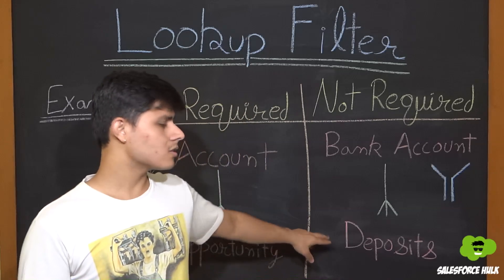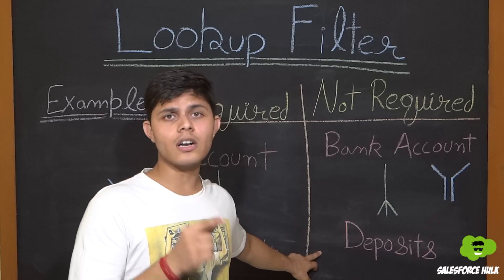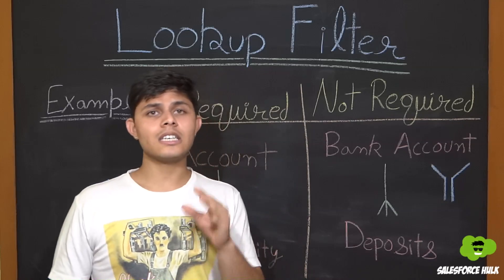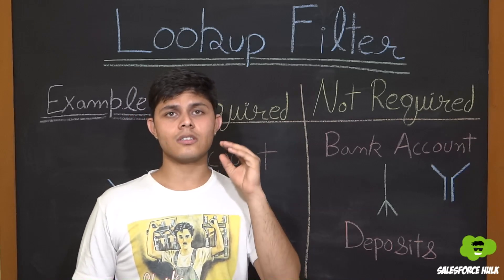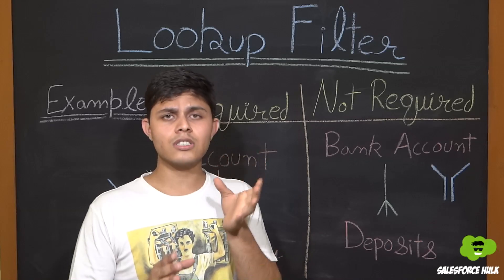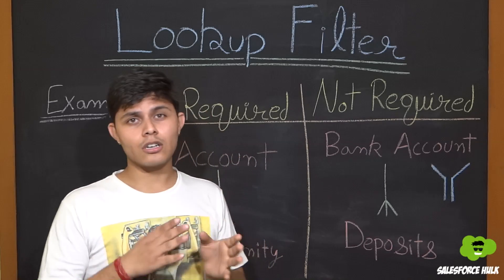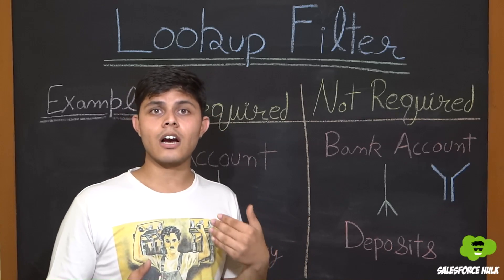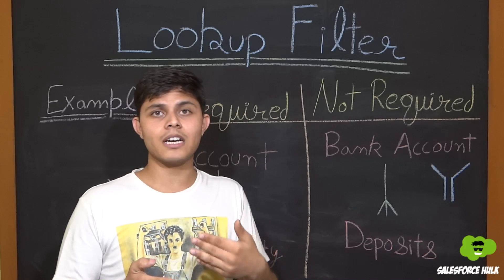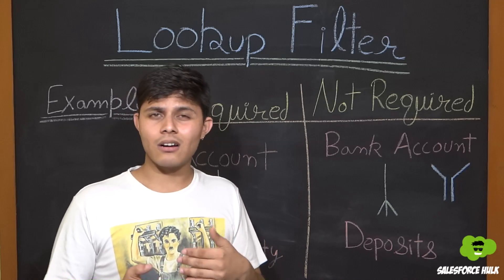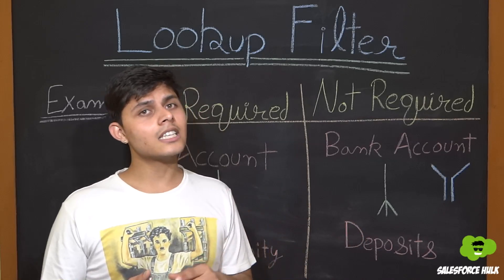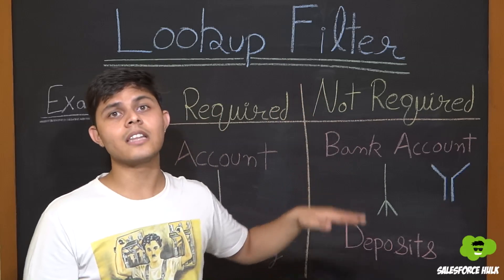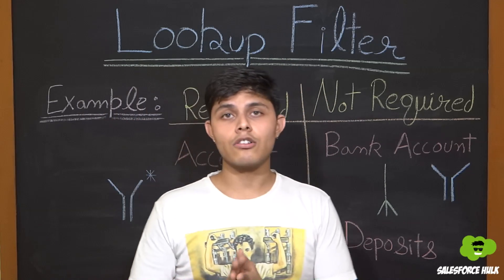Whenever you try to create a deposit record and use the lookup search icon, the lookup dialog will show only bank account records whose type is current account, and not savings accounts or other types. But if you want to see savings accounts also — because deposits can also be made into savings accounts or other account types — you will be able to clear that filter and all the records will be available in the lookup dialog. This is how lookup filters work.